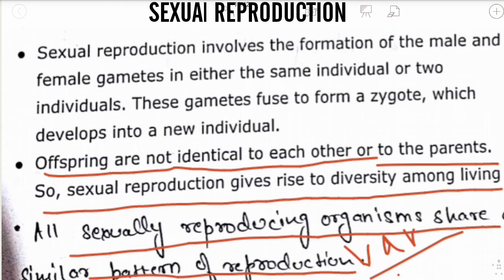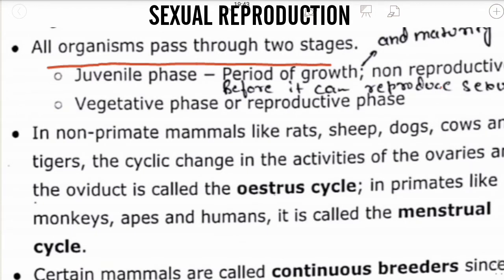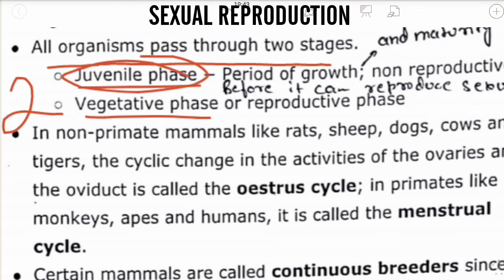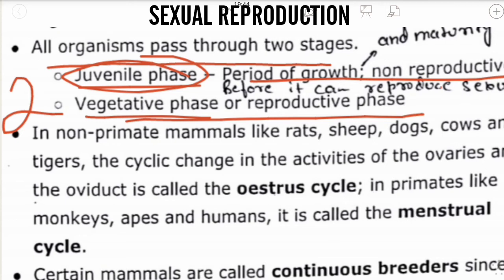Each and every sexually reproducing organism passes through two important stages: the juvenile phase and the vegetative or reproductive phase. The juvenile phase is the period of growth from birth until the organism reaches reproductive maturity. The vegetative or reproductive phase is the period when an individual organism starts reproducing sexually.